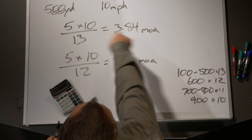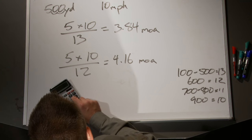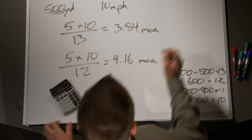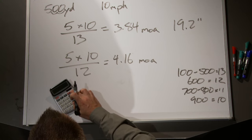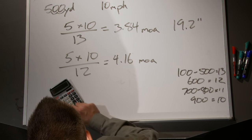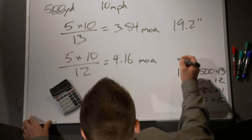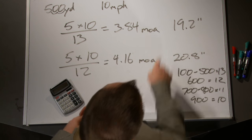That 3.84 minutes of angle, at 5 inches per minute of angle at 500 yards, gives me a 19.2-inch difference — that's how far the wind is going to blow the bullet. My 4.16 minutes of angle, times 5 inches per MOA at that distance, gives me 20.8 inches. Not that big of a difference. I'd be happy to be able to guess the wind accurately enough that I'm only going to be about an inch off.